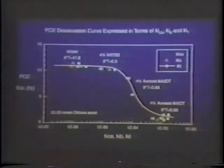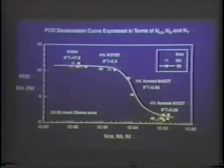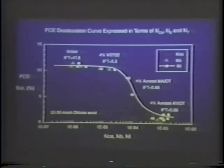Kurt did a number of experiments varying the trapping number — the sum of the capillary number and the bond number — and plotted PCE saturation versus trapping number, varying it by using different surfactant formulations and different velocities. If you keep the trapping number small you won't mobilize; if you allow it to increase, you'll mobilize most of the PCE. This desaturation curve becomes a design tool — if you want to mobilize, you know what you have to to achieve it for every sand you examine.